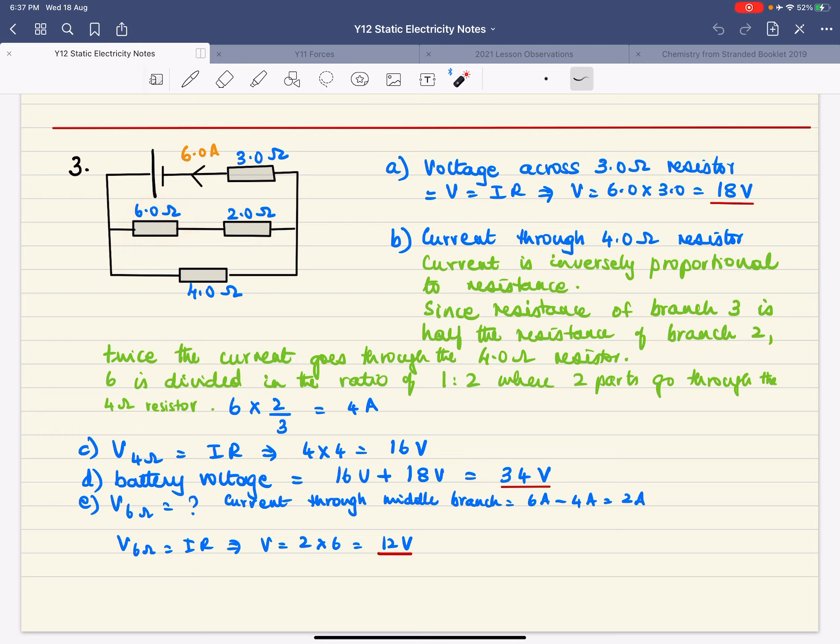In order to get this voltage we need to know the current through the resistor and the resistance. So the current, if four amps is going there then you get only 2 amps going through here because 2 plus 4 is 6 so 2 times 6 you get 12 volts.